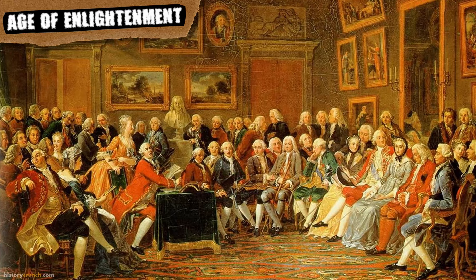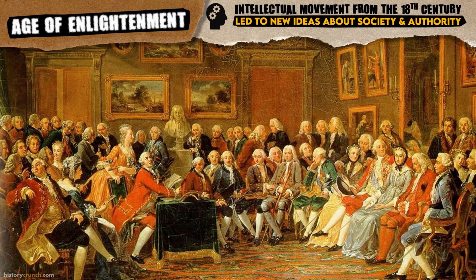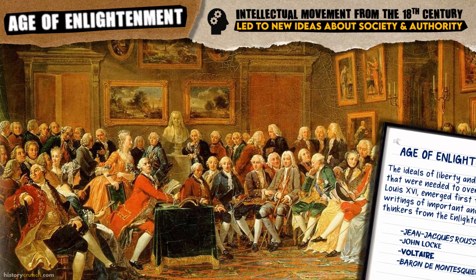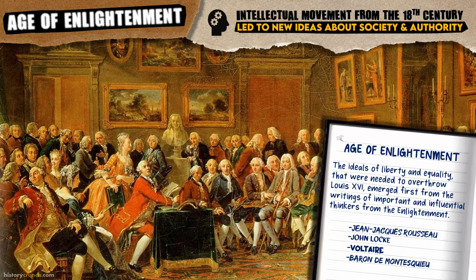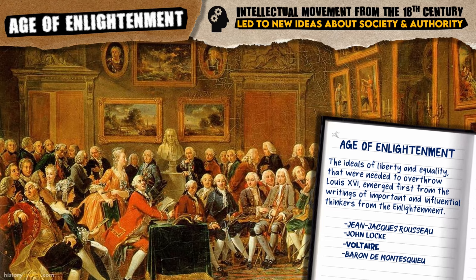The first main cause of the revolution was the impact of the Age of Enlightenment. It was an intellectual movement that occurred throughout the 18th century, which led to new ideas about society and authority. The ideals of liberty and equality that were needed to overthrow Louis XVI emerged first from the writings of important and influential thinkers, including Jean-Jacques Rousseau, John Locke, Voltaire, and Baron de Montesquieu.